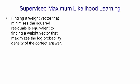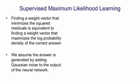I'm now going to talk about what's really going on when we minimize a squared error during supervised maximum likelihood learning. Finding the weight vector that minimizes the squared residuals — the differences between the target value and the value predicted by the net — is equivalent to finding a weight vector that maximizes the log probability density of the correct answer. In order to see this equivalence, we have to assume that the correct answer is produced by adding Gaussian noise to the output of the neural net.